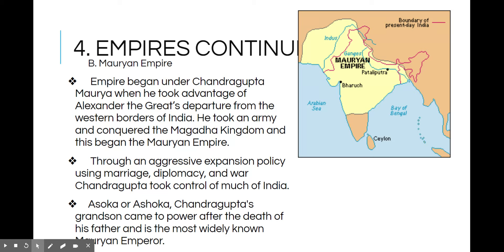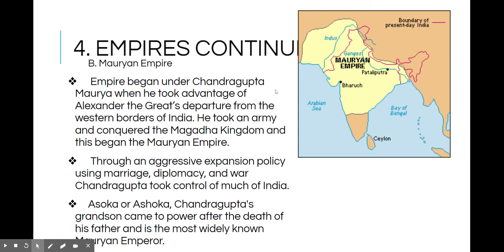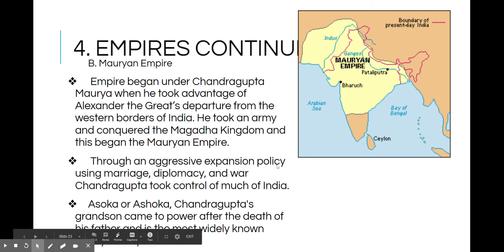The Mauryan Empire began under Chandra Gupta Maurya, who took advantage of the power vacuum left after Alexander the Great's death and the splitting of his empire. Chandra Gupta Maurya conquered the Magadha Kingdom, and this began the Mauryan Empire. Through an aggressive expansion policy using marriage, diplomacy, and war, Chandra Gupta took control of much of India.